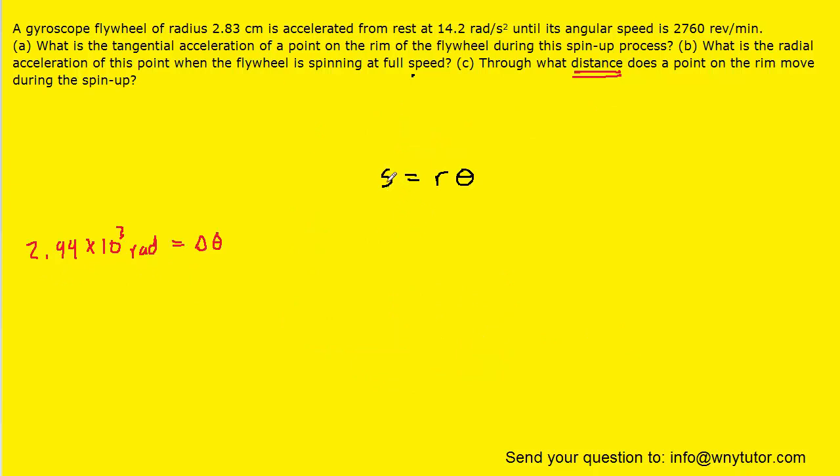And that conversion is the distance equaling the radius times the angular displacement. So we'll plug in those two values to get the distance. And we end up with a distance of approximately 83.2 meters. And this is the correct answer to part C.